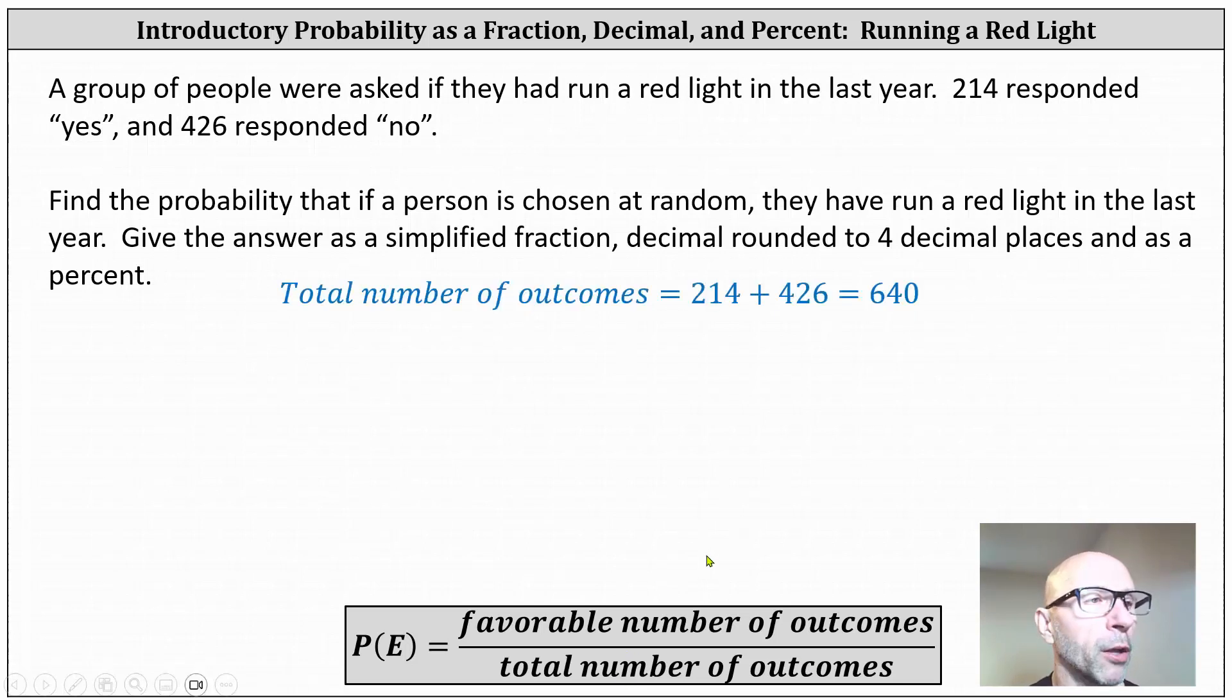Because we're looking for the probability that if a person is chosen at random, they have run a red light in the last year, the favorable number of outcomes will be the number who responded yes, which is 214. This indicates a probability of 214 divided by 640.